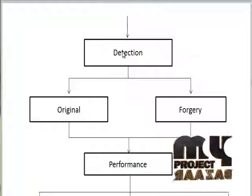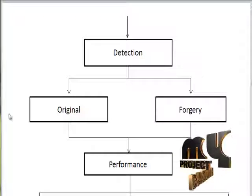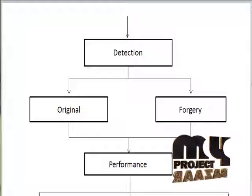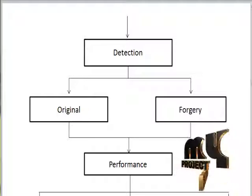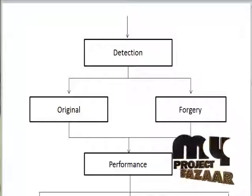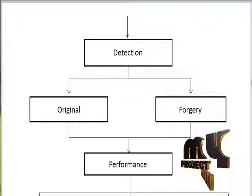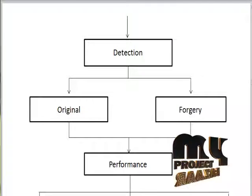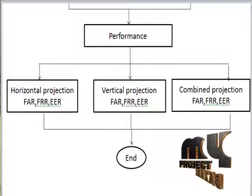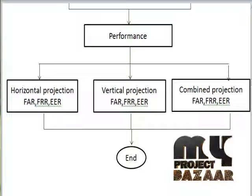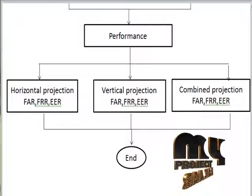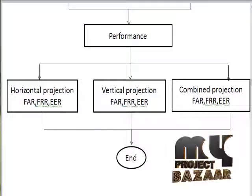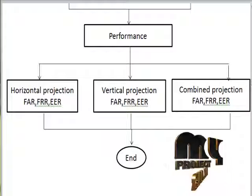In the detection stage, we identify whether the signature is original or forgery. After feature extraction, we train the original signature image and forgery signature image separately. Then after training, we calculate the minimum distance for the signature image using Euclidean distances. After that, we can detect whether the signature image is original or forgery. The performance features are extracted in horizontal projection, vertical projection, and a combination of both projections. Vertical projection features-based signature verification gives better and improved results over horizontal projection-based features.